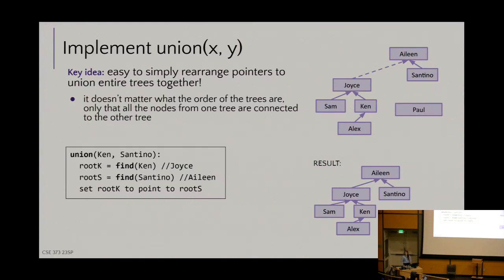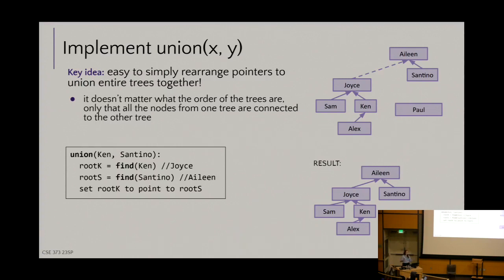I can point one representative at the other and get the merged result. Right now it's just 'pick one, mush them together.' We can do this because we just care about these items being associated together — where they actually are in the tree is totally arbitrary. Eileen is not in some way higher priority than Santino. I just need them all connected, so the actual tree structure is whatever makes it easier for us as programmers.